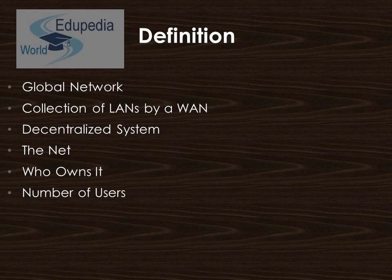First of all, the definition — what is an internet? The internet is a global network connecting millions of computers. More than 190 countries are linked into exchange of data, news, and opinions. It is a network of networks that consists of millions of private, public, academic, business, as well as government networks.